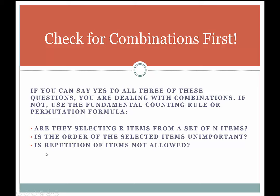The third question is: is repetition of items not allowed? In other words, once something is selected, it can't be reselected. For example, if you're taking three friends from a group of five, once you select Sally, she can't be used again — she can't be cloned and used three times. She's already selected and not available again. If repetition is not allowed, that meets the criteria for combinations. If you can say yes to all three questions, it's a combination — use the combination formula.